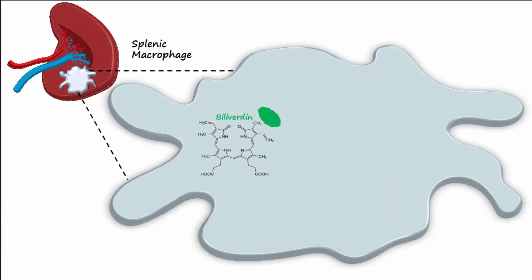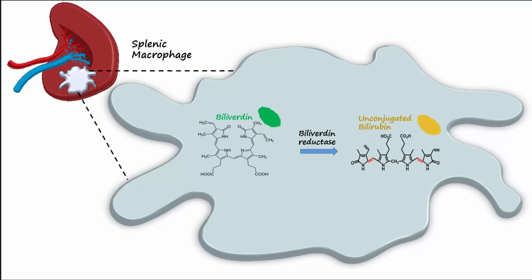The biliverdin is reduced inside the macrophage by biliverdin reductase into unconjugated bilirubin, which is an orange pigmented molecule. The process of a bruise changing colors is due to breakdown of red blood cells in the tissues as the heme molecule is converted to these various pigments, such as biliverdin and bilirubin.